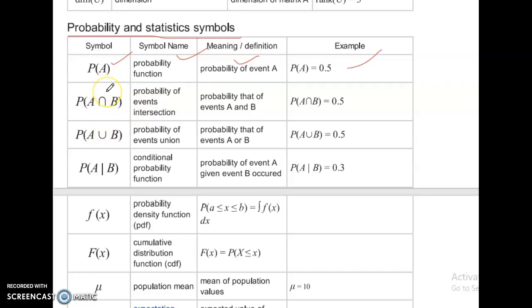Probability of event A intersection. Probability that of event A and B, 0.5. Probability of event A union. This is union. Probability of event A or B. Union, P of A union B equal to 0.5. P of A intersection B equal to 0.5.